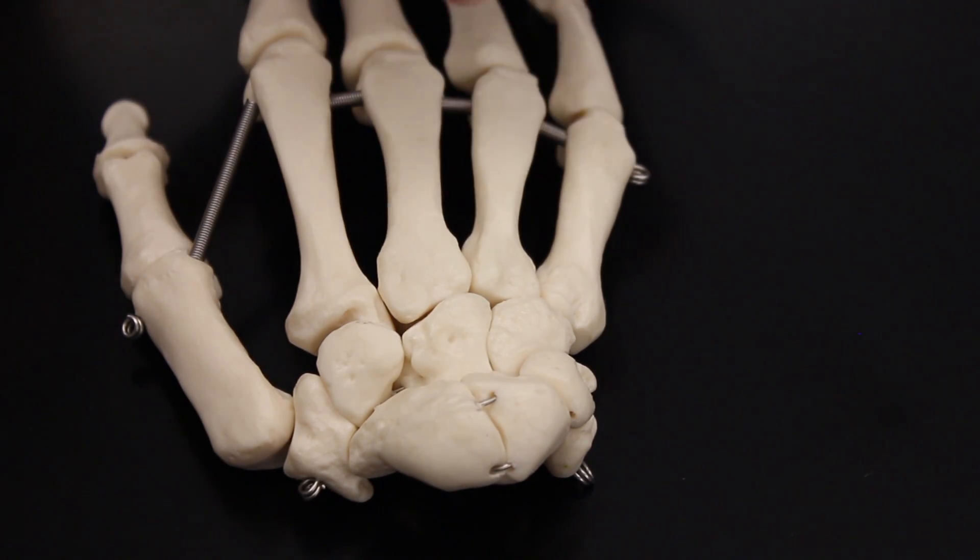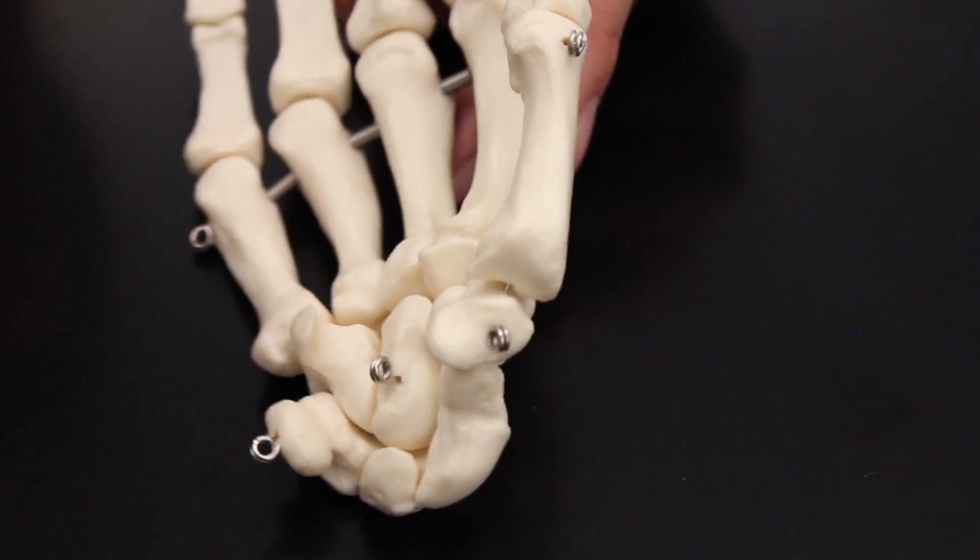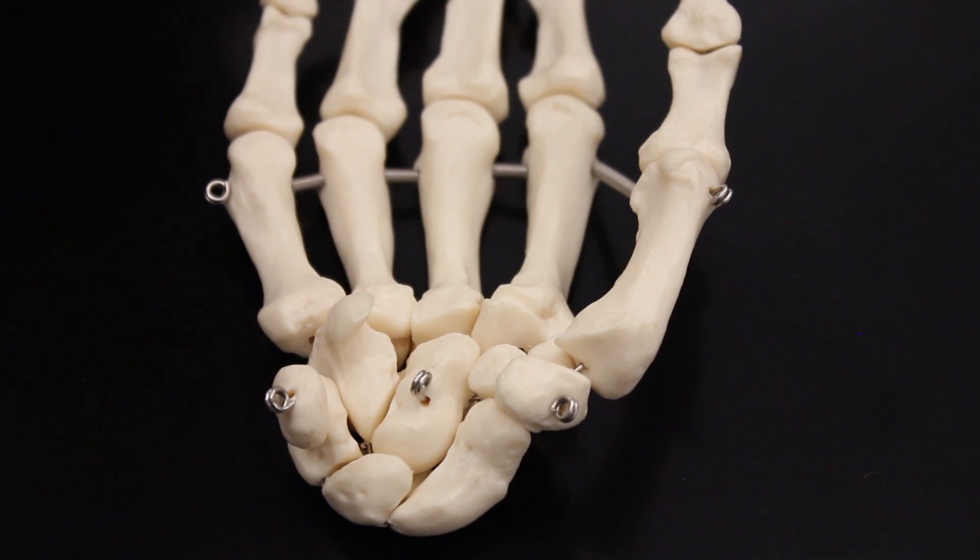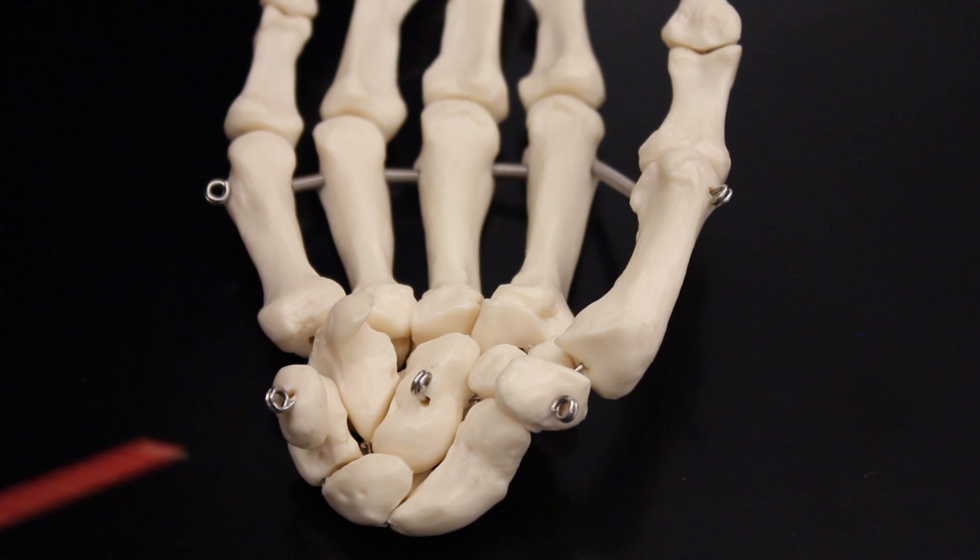But now what I'm going to do is I'm going to go ahead and flip it over, and then we're going to get the palmar view of the hand. So now we're going to take a look at these carpal bones from the palmar view. Again, this is scaphoid.